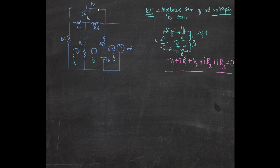Mesh analysis involves circuits with multiple loops — here there are loops 1, 2, 3, and 4. This technique is used only when there are more than one loop, and we use it when we're trying to find the current flowing within each of these loops.